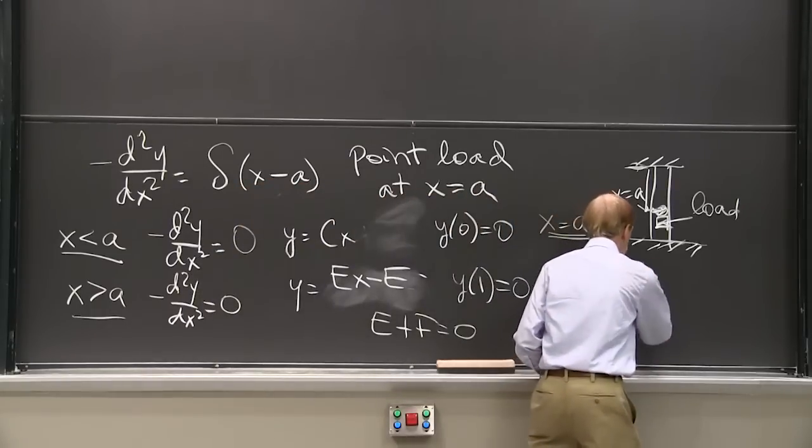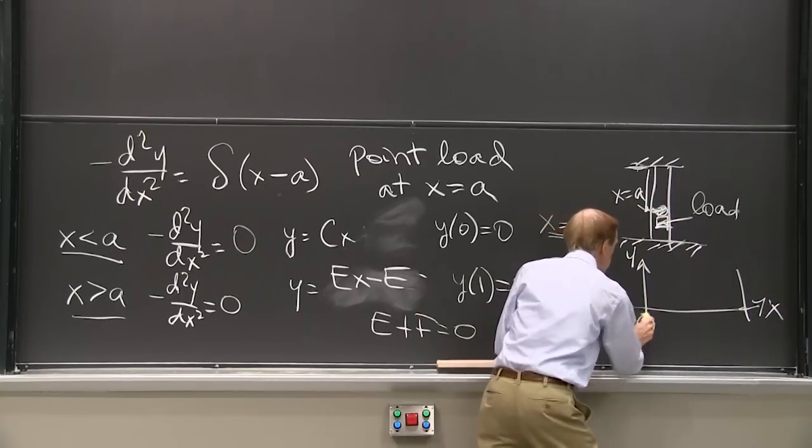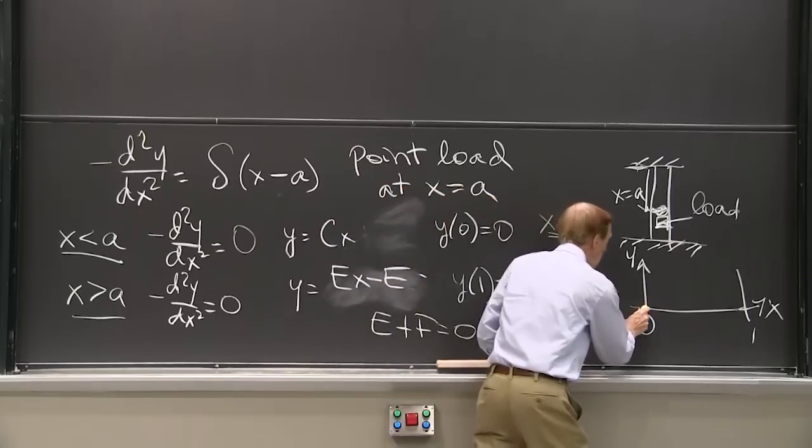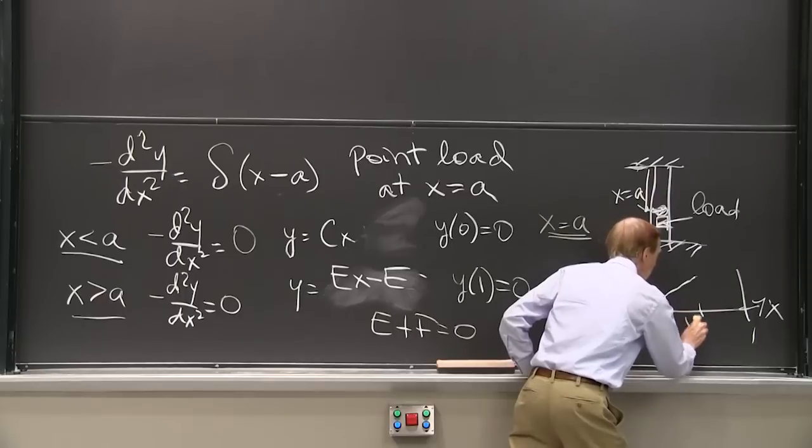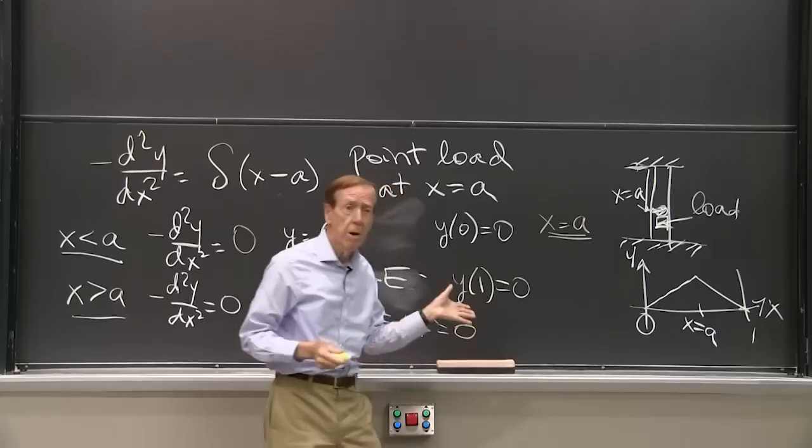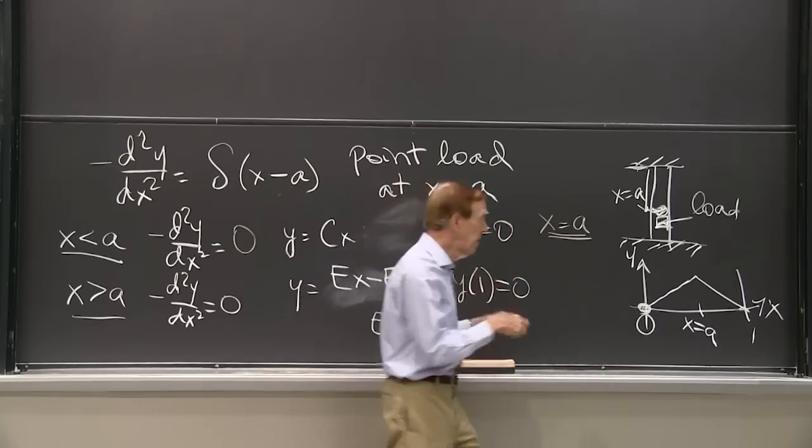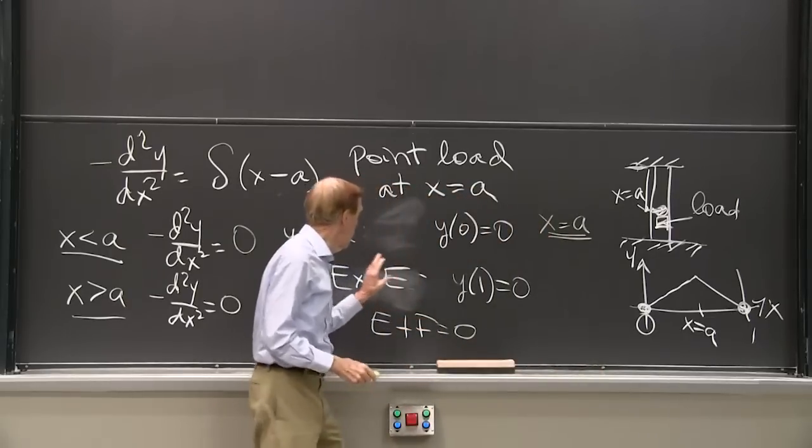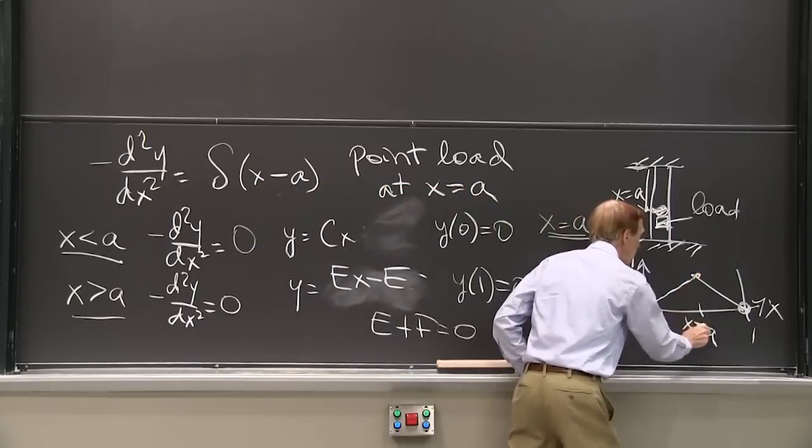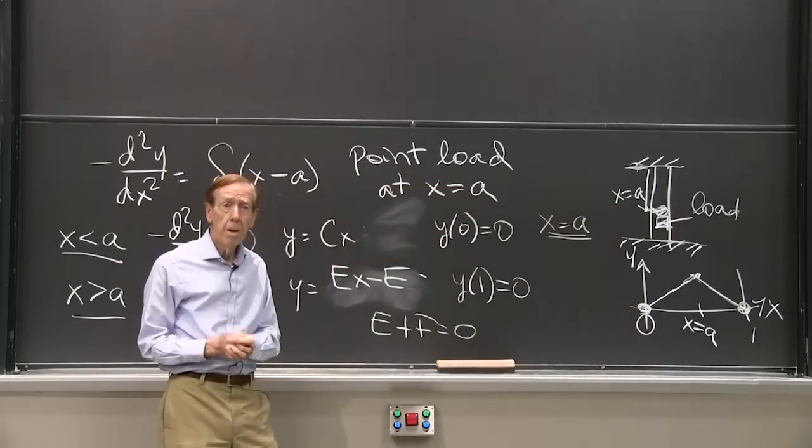Let me draw a picture of the solution here. Here is x. Here's y. Here's x equals 0. Here's x equal 1. I see a linear function, cx, up to the point x equal a. And here I have a linear function coming back to 0. That's the picture of the solution, the graph of the solution. It has this 0 at the left boundary. It has 0 at the right boundary. In between, it is cx and ex minus e. And I have made it continuous at x equal a. The bar is not coming apart. So this solution runs into that solution. That's good. That's one more condition, but I need one final condition.